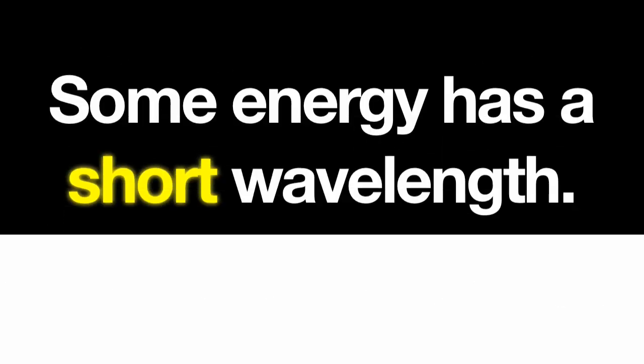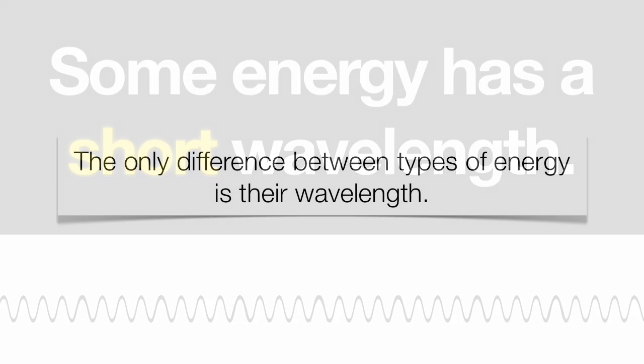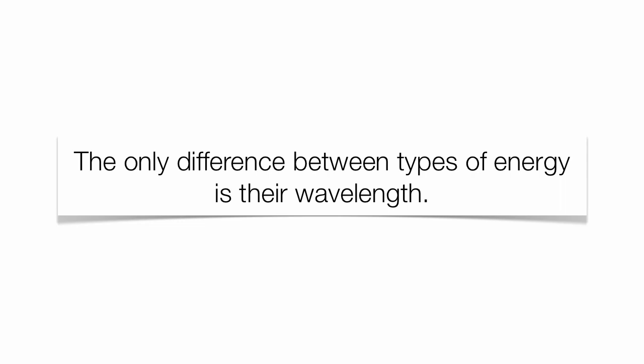When you compare that with short wavelengths like ultraviolet, we know what happens with too much exposure—you get sunburned. Why? With shorter wavelengths, you get hit with more waves per unit time. Short wavelengths tend to be more harmful to us.